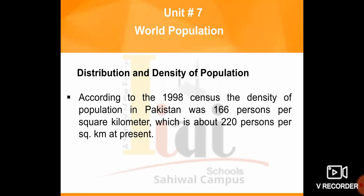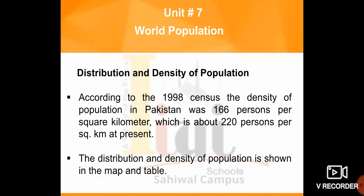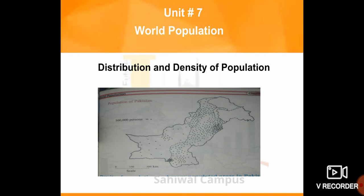According to the 1998 census, the density of population in Pakistan was 166 persons per square kilometer, which has increased to about 220 persons per square kilometer at present. The distribution and density of population is shown in the map and table. In the map, dots are visible — one dot denotes 500,000 (5 lakh) persons.